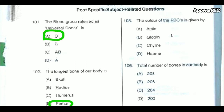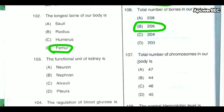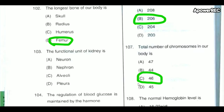The color of the erythrocytes is given by heme. The total number of bones in our body is 206. The total number of chromosomes in our body is 46.